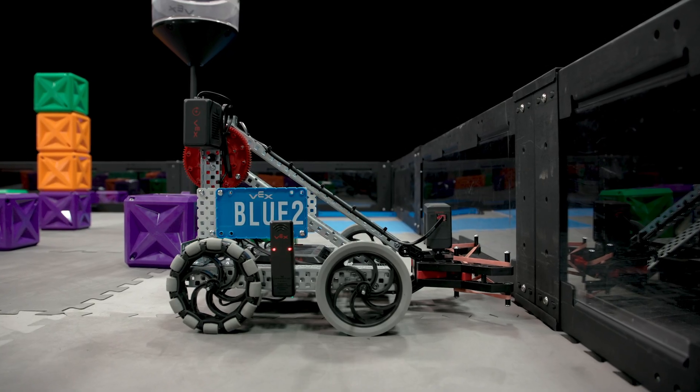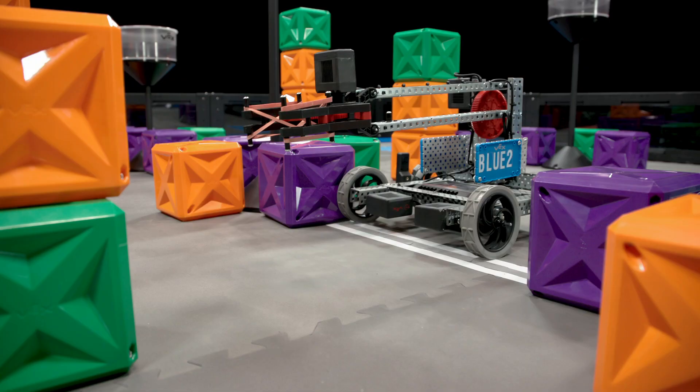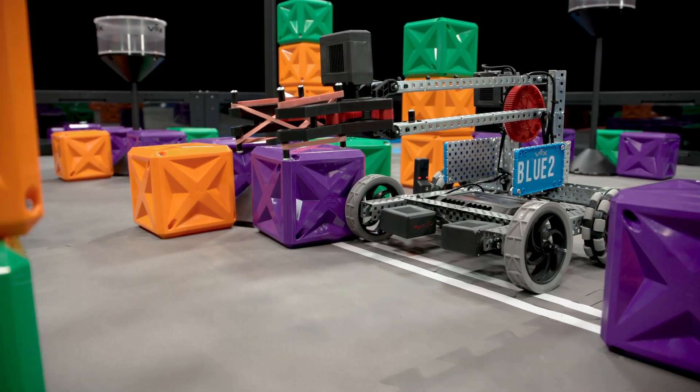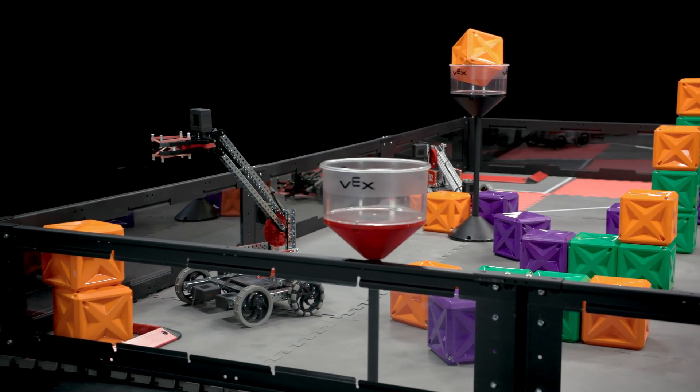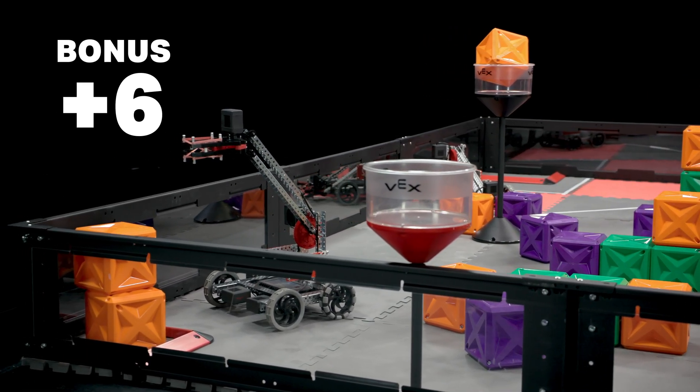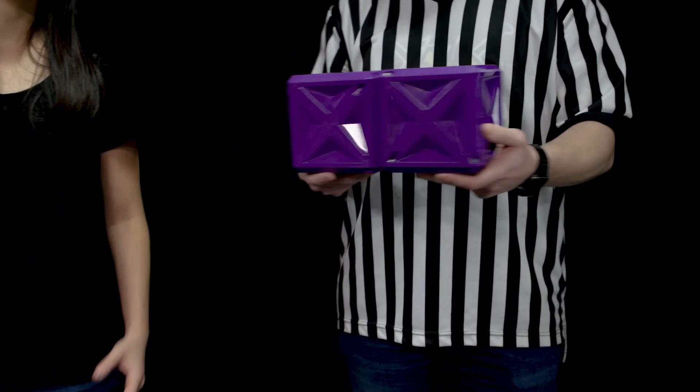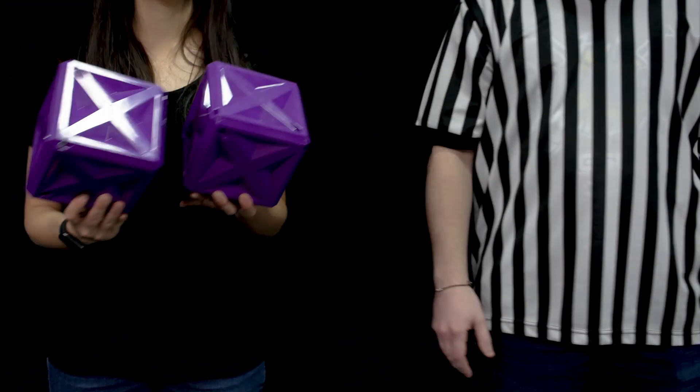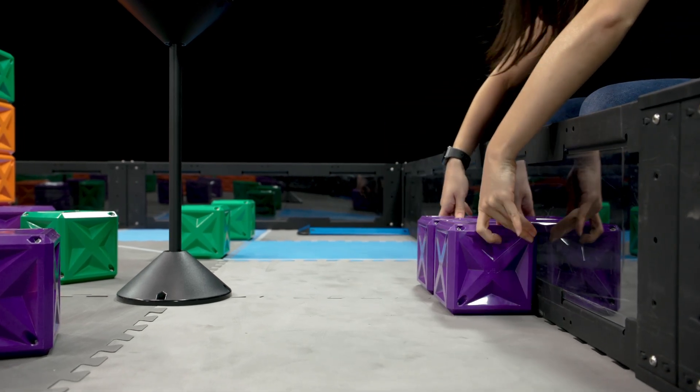Each match begins with a 15 second autonomous period where robots score on their side of the field without help from their drivers. The alliance that scores more points in the autonomous period is awarded with six bonus points added to the final score at the end of the match. The alliance who wins this autonomous bonus is also awarded two purple cubes, which may be introduced at any time during the driver control period.